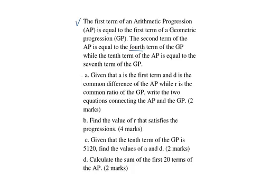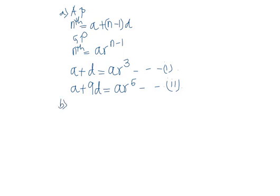Part B: we are told to find the value of R that satisfies the progressions. We are going to solve these two equations simultaneously to get the value of R. We can make D the subject of the formula in the first equation: D is equal to AR raised to 3 minus A. Then we substitute the value of D into equation number 2.